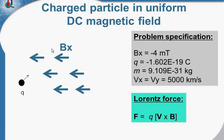There is a uniform magnetic field and we know the charged particle parameters and the field parameters — the flux density. We know the particle velocity, the initial velocity, about 5000 kilometers per second. Our task is to calculate the particle trajectory in the magnetic field.